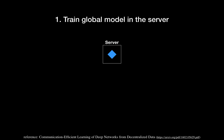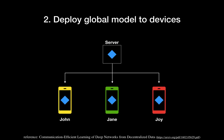The first step is just the same as a normal machine learning model. We train the first model from the server and deploy the model to each device. Now John, Jane, and Joey all have the same model, which is the blue diamond as you can see here.